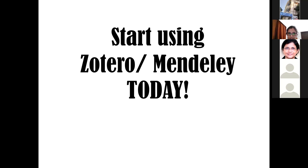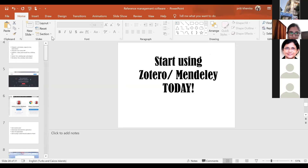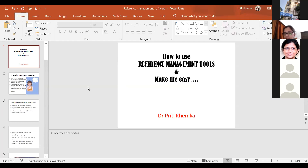A question: sometimes we use the same reference several times in an article — do we need to type out the name or author every time, or can we just type the number? As far as I know, you will have to type out the author name each time. But it will not go under a new number — it will show the same number, which is what we need: it should identify the same article every time.